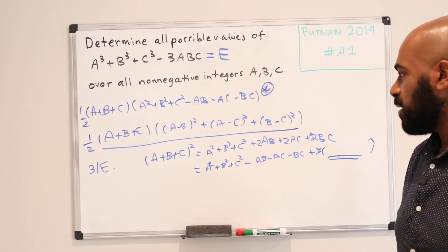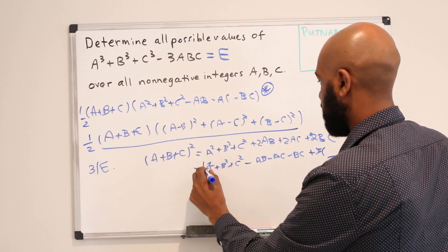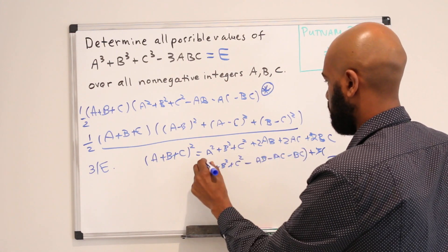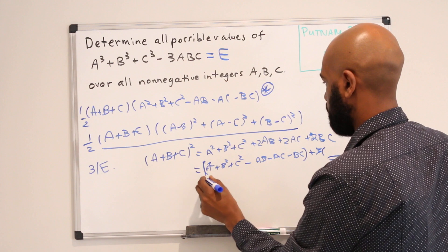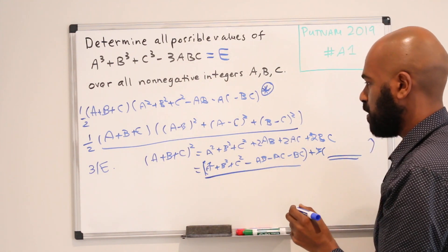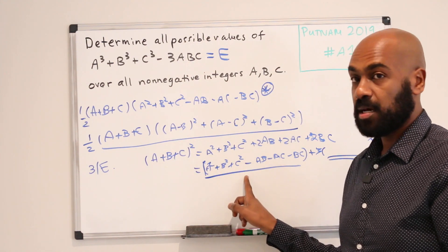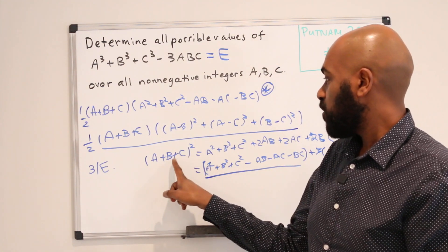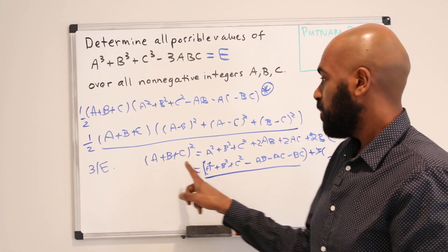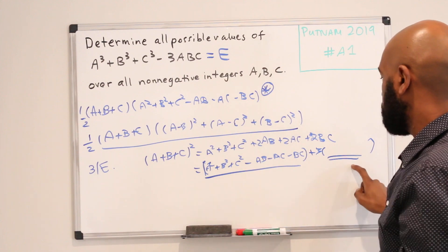That means that if you look at this expression right here, 3 divides this number if and only if 3 divides this because these two differ by a multiple of 3.